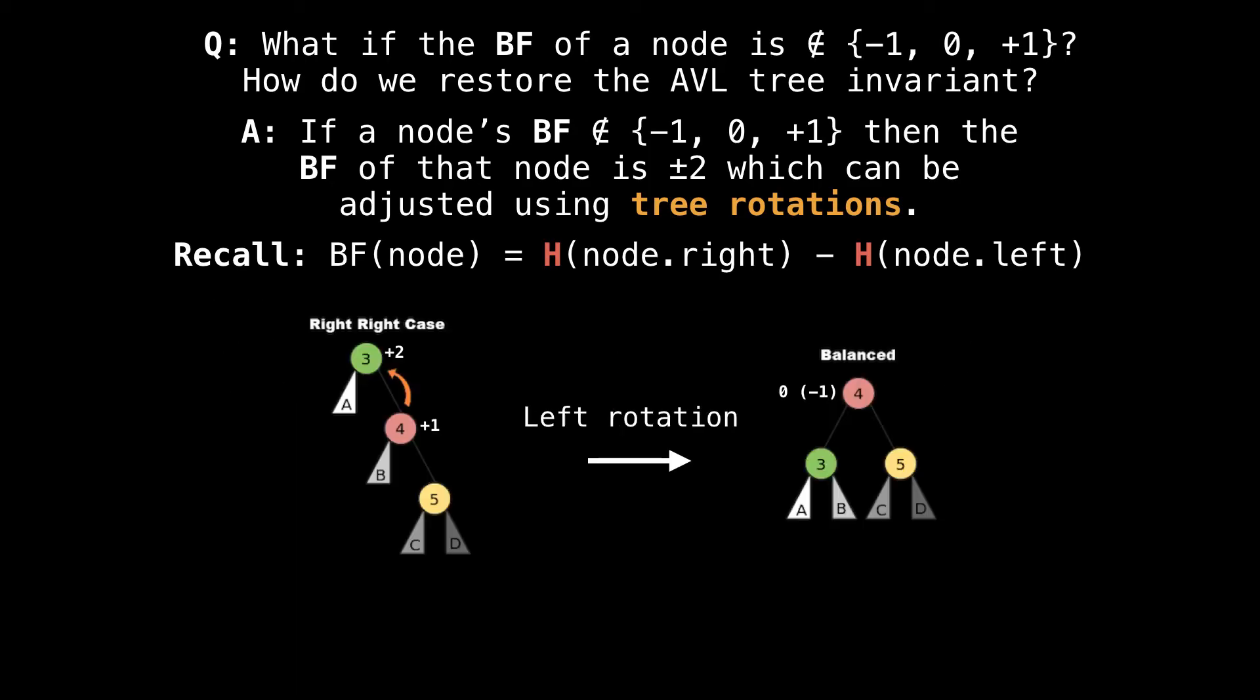The third case is the right-right case, which is symmetric to the left-left case. So instead of doing a right rotation, we do a left rotation about the green node.